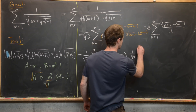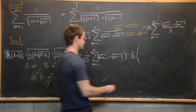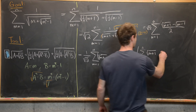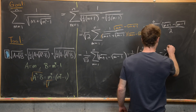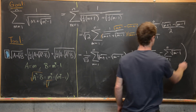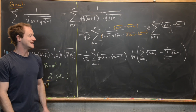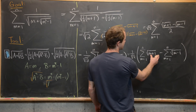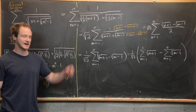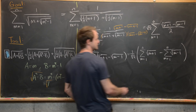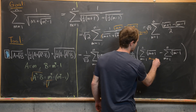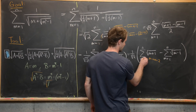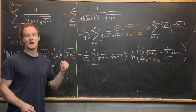So this is one over root 2 times the sum m equals 1 to n of radical m plus 1, minus the sum m equals 1 to n of radical m minus 1. Now I want to re-index the first sum so that instead of having m plus 1, it has m minus 1, to match the second sum. To do that, I send m to m minus 2, because then m minus 2 plus 1 equals m minus 1. This changes the starting index: instead of m equals 1, we start at m equals 3.